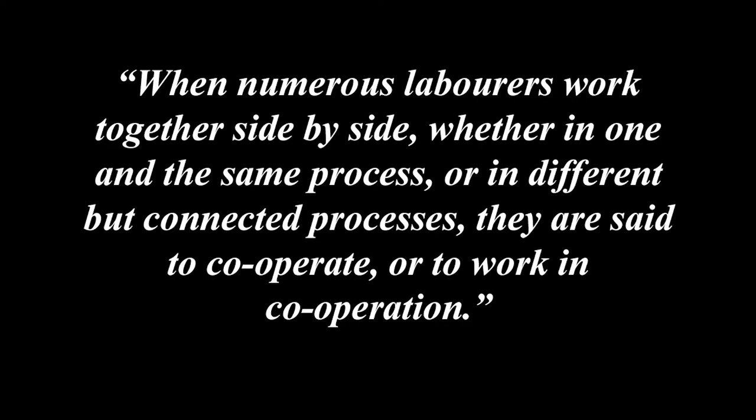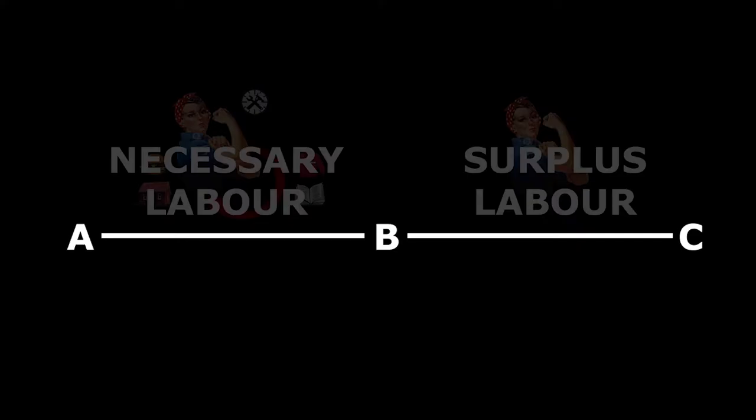When numerous labourers work together side by side, whether in one and the same process or in different but connected processes, they are said to cooperate or to work in cooperation. To further understand both relative surplus value and the process of increased productivity, we must first understand some key aspects of the formation of capitalism itself. Marx argues that the first fundamental form of capitalist mode of production is that of the cooperation of labour — capitalism brings together large quantities of workers into the labour process.